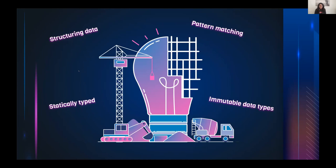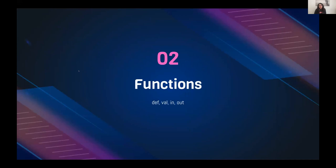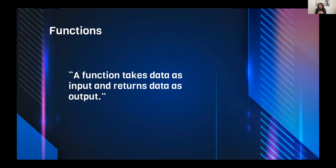To summarize: since Scala is a statically typed language, the compiler helps us produce correct programs. Using algebraic data types, we can have more information about what the program does. Now let's look at functions — functions take data as input (these algebraic data types or simple types) and return data as output.